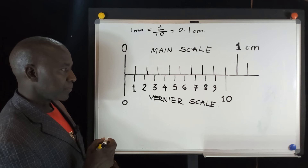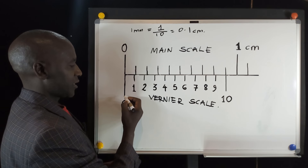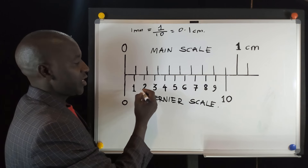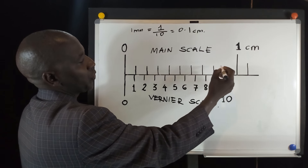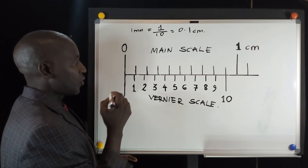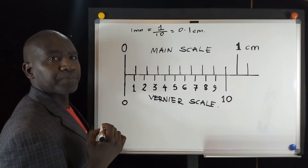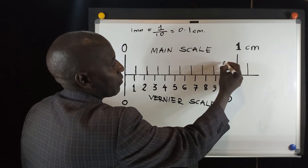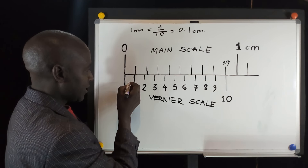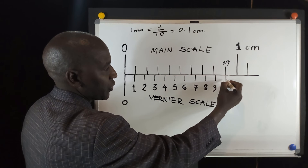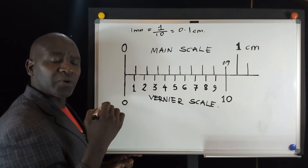Let us look at the Vernier scale. The Vernier scale starts from zero and has ten divisions. These ten divisions occupy a distance equal to 0.9 centimeters on the main scale — from zero all the way to the ninth division. So 0.9 centimeters contains ten divisions.